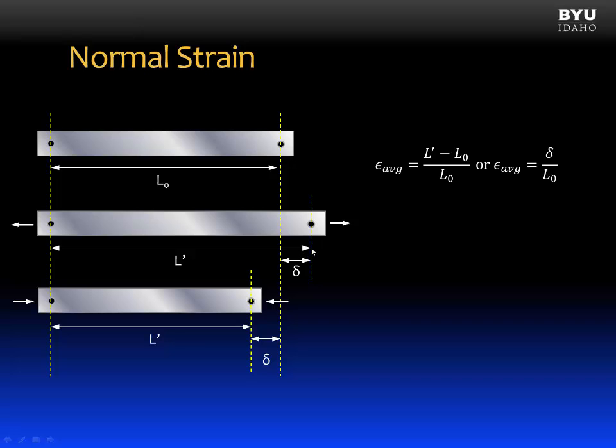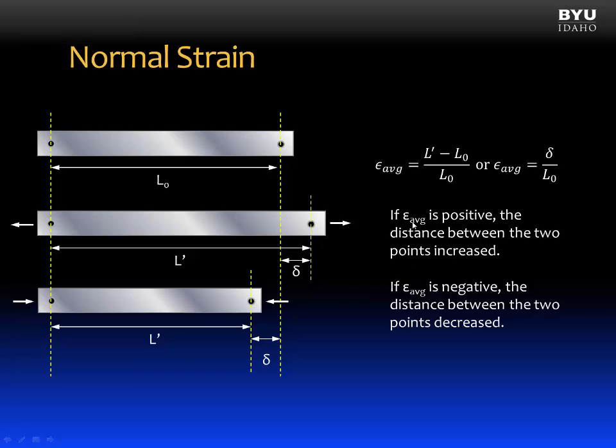To clarify whether the strain is occurring in a member that is getting longer or in a member that is getting shorter, we're going to use appropriate signs. If our average strain is positive, then the distance between the two points has increased. Let's look at this first example where we put a tension force on the member and it elongated. The new length, L-prime, is larger than the original length. So if we look at our equation, L-prime minus L-naught will yield a positive number on the top. So our average normal strain will be positive.